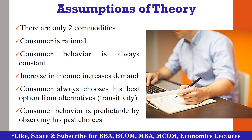Paul Samuelson made certain assumptions before explaining his theory. The assumptions are: there are only two commodities. The consumer is assumed to be rational, meaning he takes decisions after studying everything. It is also assumed that the consumer behavior is always constant and does not change. The increase in income increases the demand. Another assumption is transitivity — the consumer always chooses his best option out of the available alternatives.